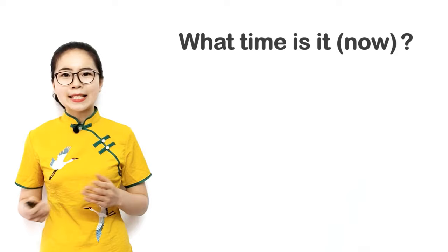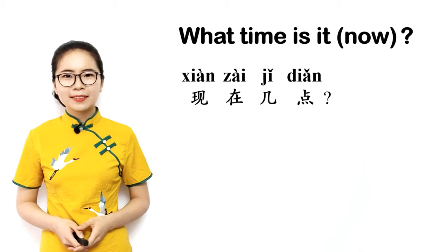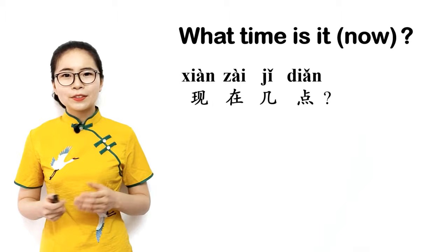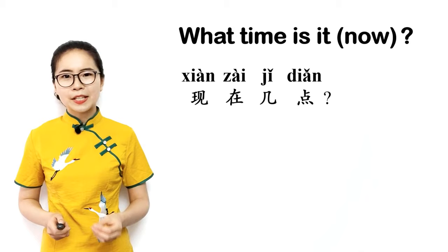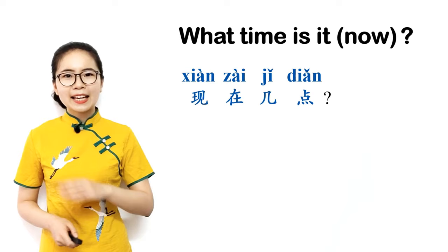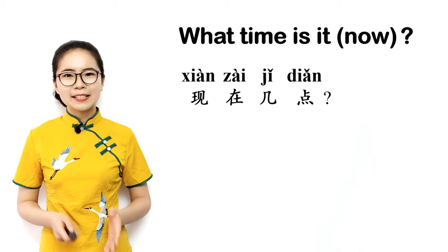Okay, now let's learn how to ask the current time. To ask what time is it, in Chinese we say 现在几点？ 现在 means now. 几 is a question word used to ask about a small number, and 点 is a measure word for hours. So literally you're asking, now what hour? And people will answer with the current time, including hours and minutes. Please repeat after me: 现在几点？ 现在几点？ 现在几点？ What time is it?